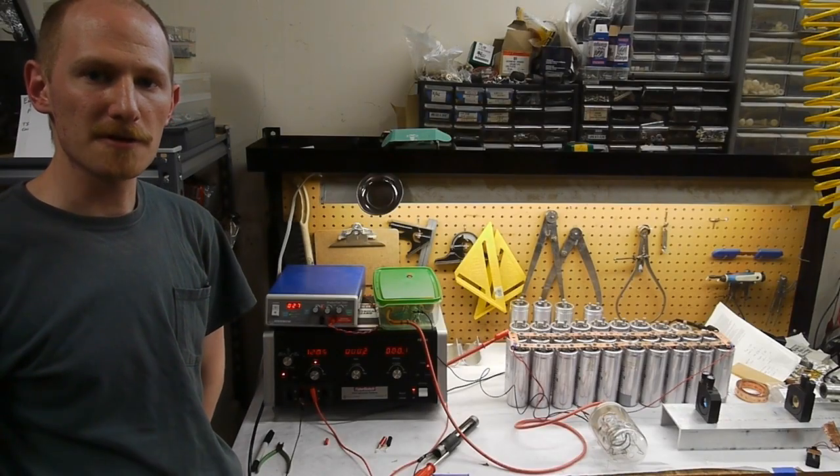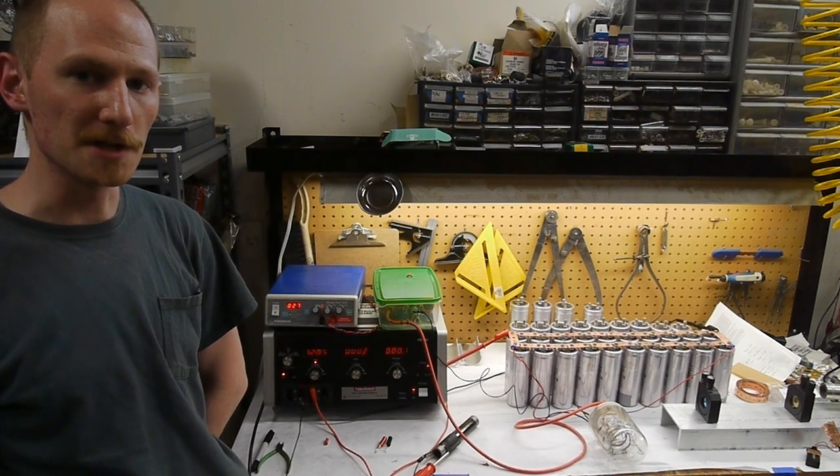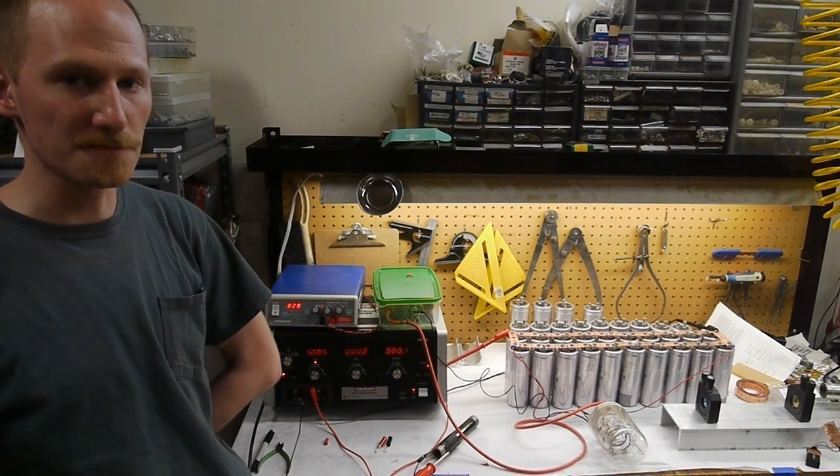Hey everyone! I built a better trigger circuit for my flash tube stuff that I'm going to use for the Ruby laser project. So I thought I'd show you how I did it and what sort of flash tubes I can trigger with it.